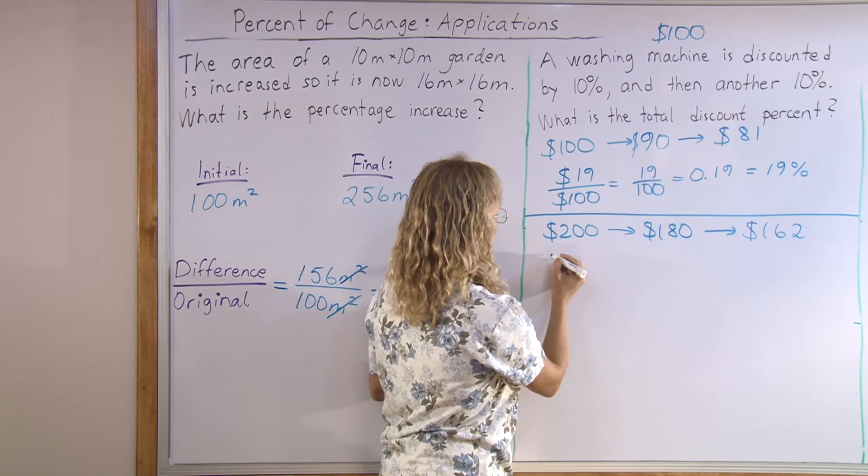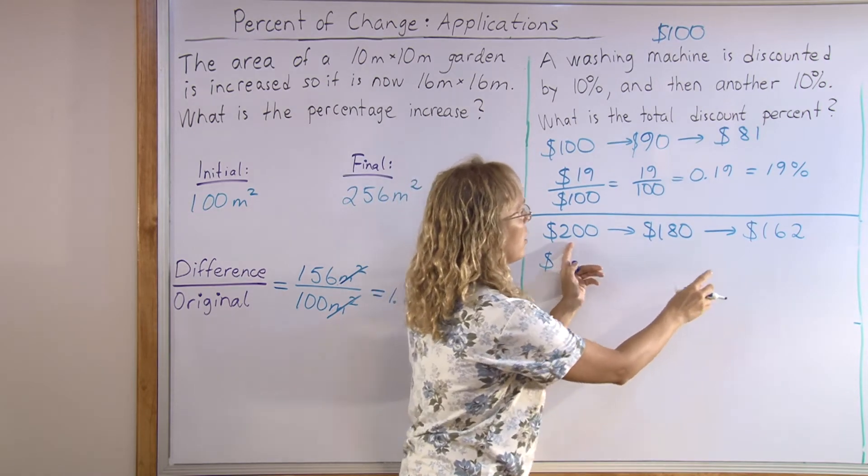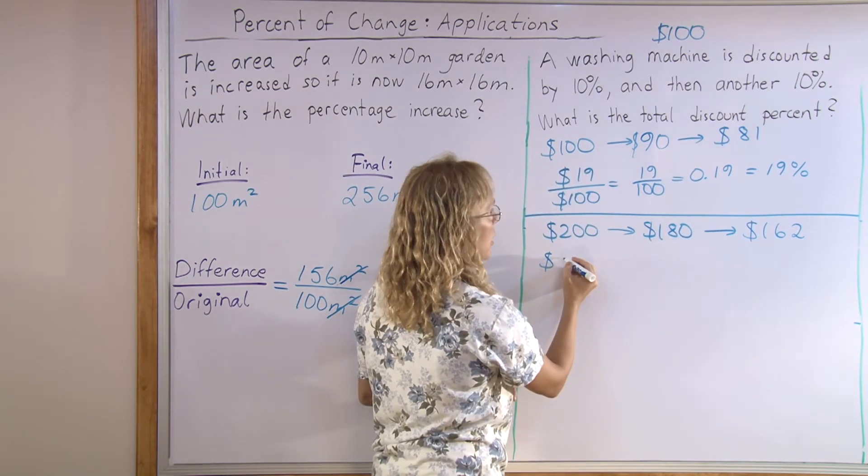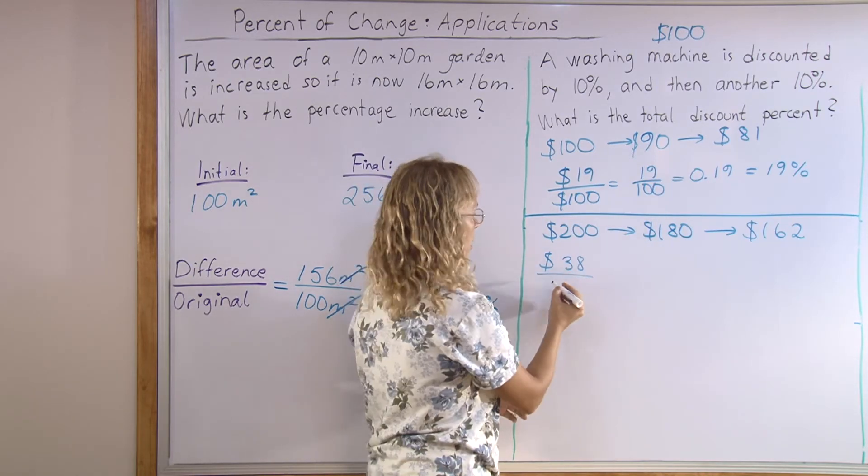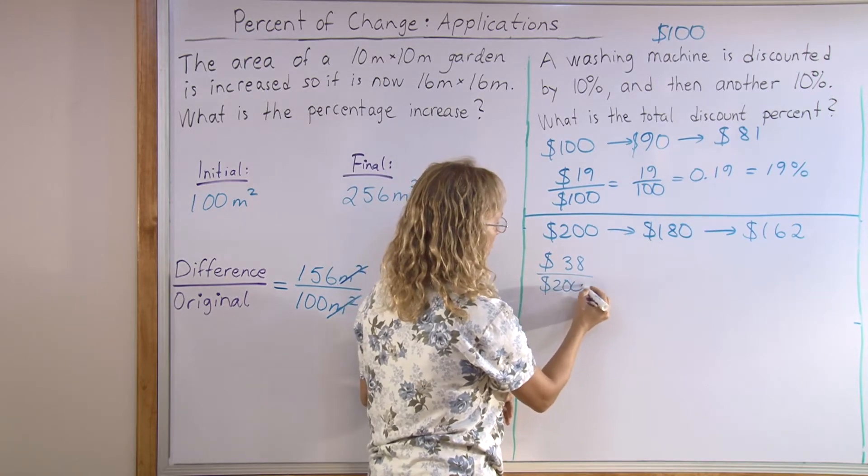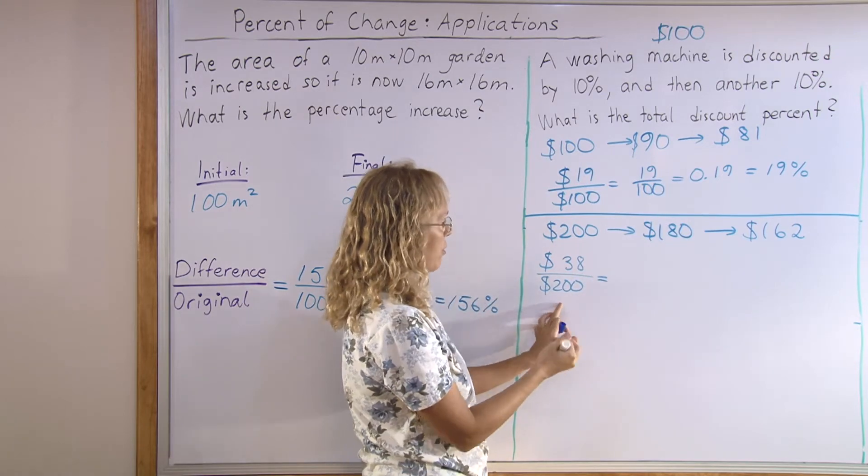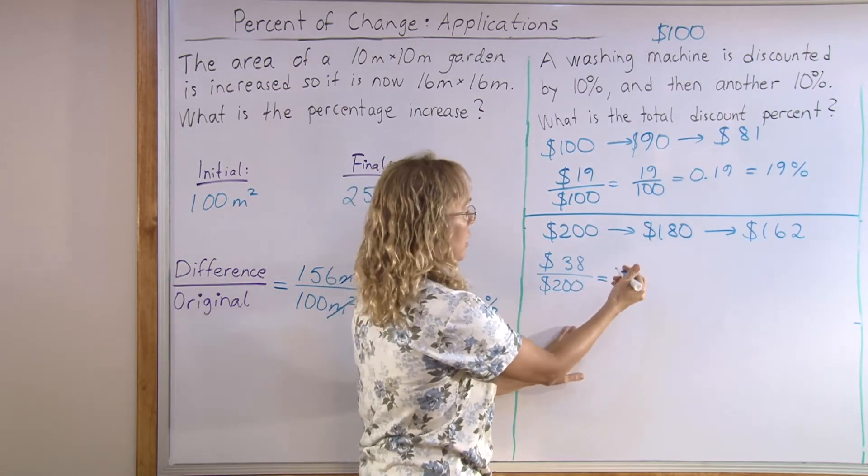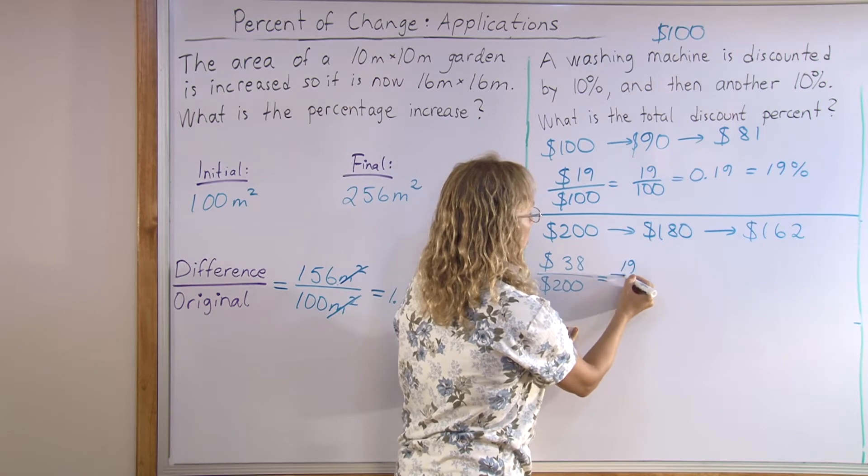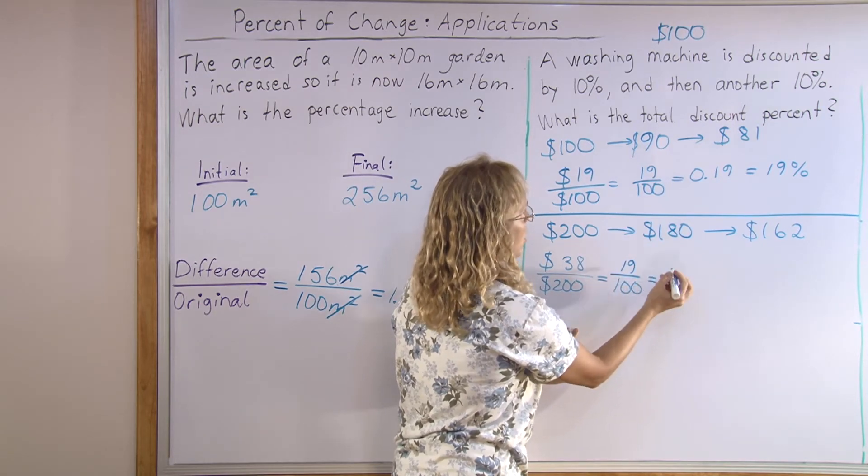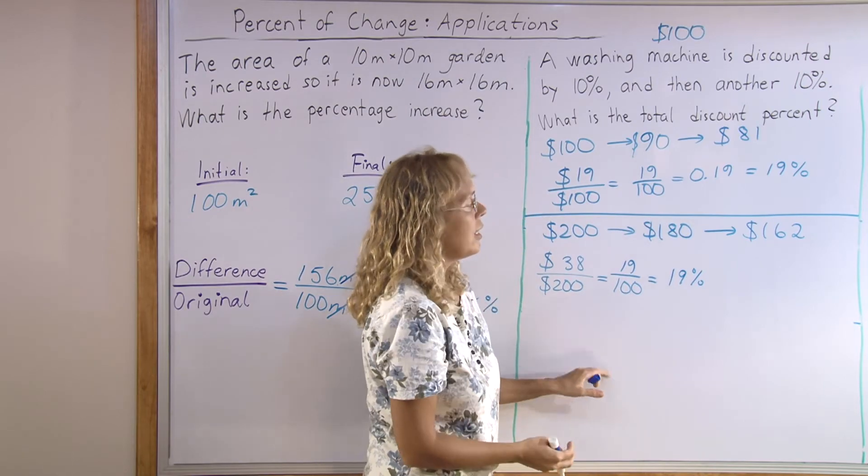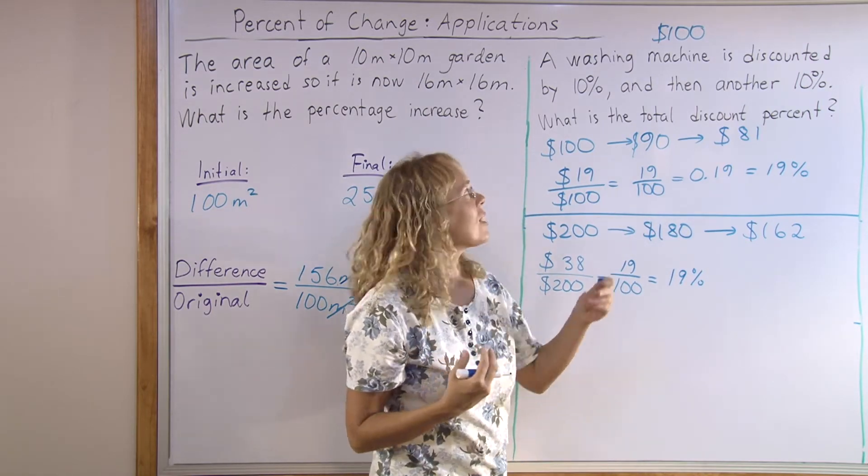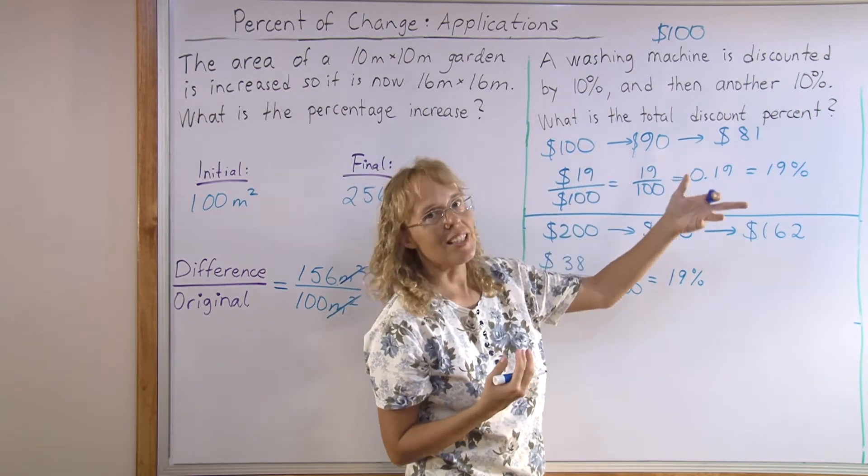Again, we look at the difference between these two to find the total discount percent. The difference between $200 and $162 is $38. And divide that by the original price, $200. And this one simplifies, if you divide both by 2, it simplifies to the fraction 19 over 100. So, we get the same as here, 19%. The total discount is 19%, not 20% that you would get if you add 10 and 10.